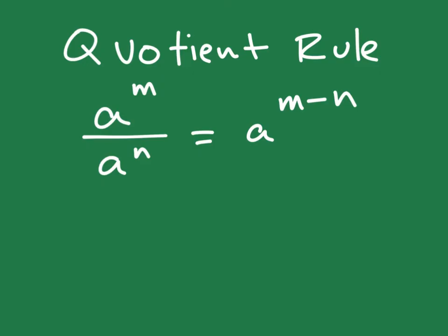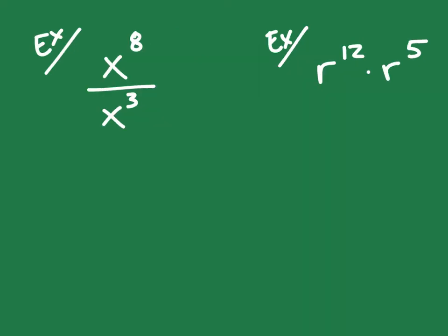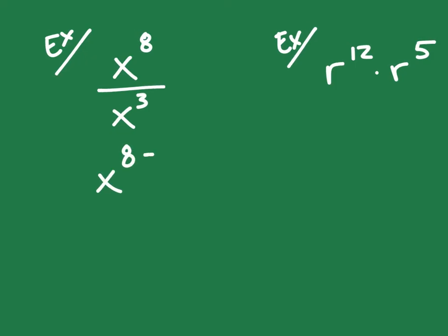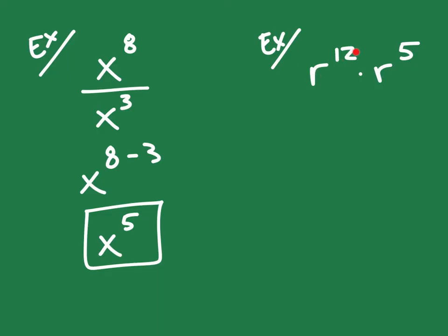I'm going to do two different examples using variables to show you how we use these. In these two examples, all it's going to ask you to do is just simplify this. So x to the 8th divided by x to the 3rd. Remember, if you're dividing things using the quotient of two things, then you're just going to subtract your exponents. So x to the 8 minus 3 power is just x to the 5th. That's your answer. Over here, r to the 12th times r to the 5th means that you're finding the product of these two things. You use the product rule and you would just write this as r to the 12th plus 5 power, which would just give you r to the 17th.